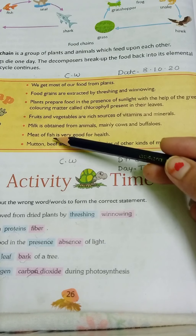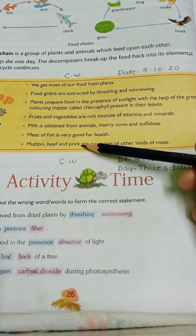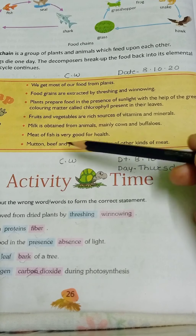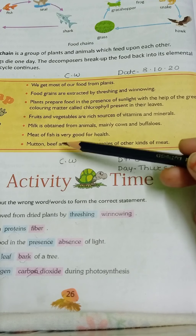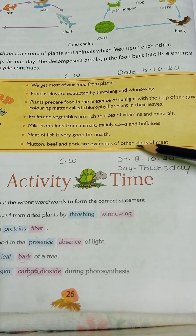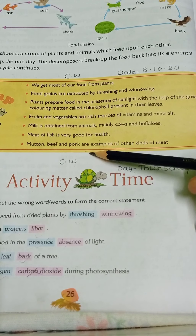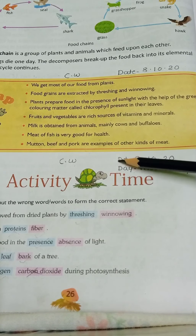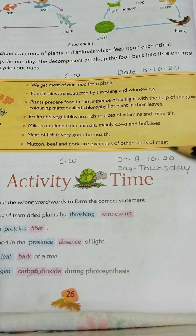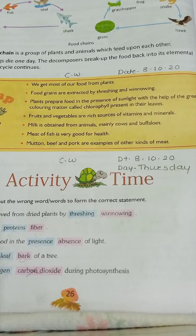Meat of fish is very good for health. Mutton, beef, and pork are examples of other kinds of meat.